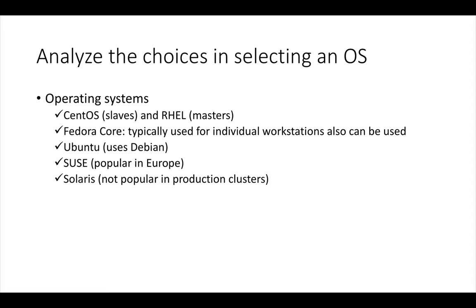When it comes to slaves, even if a few of the nodes go down because of a bug in the OS, the cluster can still be up and running. Whereas masters are more sensitive, so you need to have support from official partners or vendors. It is typical to have Red Hat on masters and CentOS on slaves.